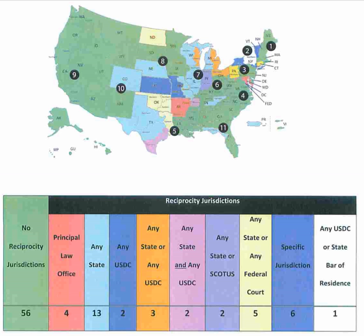Most extinct district courts have disappeared by being divided into smaller districts. The following courts were subdivided out of existence: Alabama, Arkansas, California, Florida, Georgia, Illinois, Indiana, Iowa, Kentucky, Louisiana, Michigan, Mississippi, Missouri, New York, North Carolina, Ohio, Pennsylvania, Tennessee, Texas, Virginia, Washington, West Virginia, and Wisconsin. On rare occasions, an extinct district court was extinguished by merging it with other district courts. In every case except one, this has restored a district court that had been subdivided.